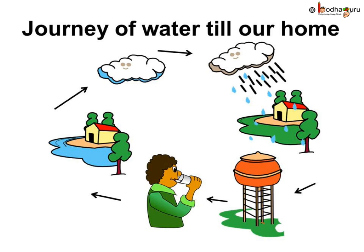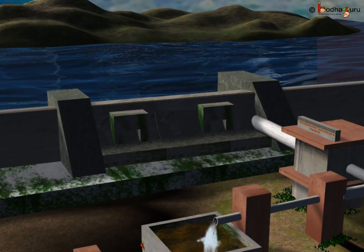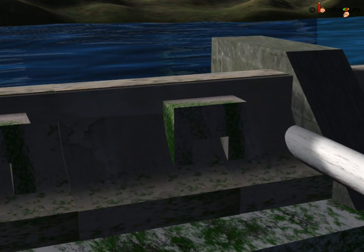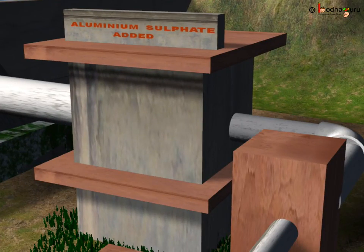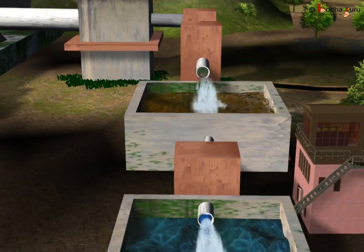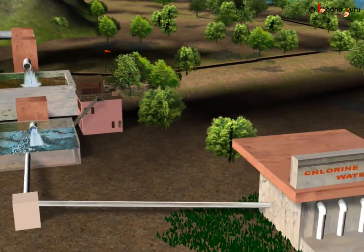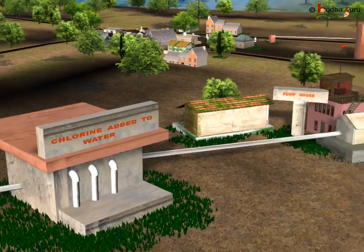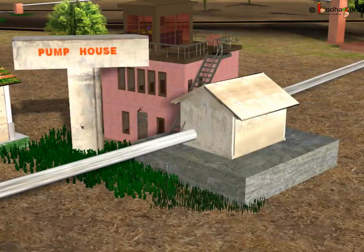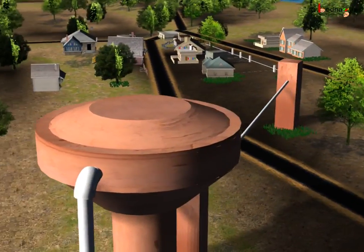Do you know how you get clean drinking water at home? The water reaching our homes is first cleaned in town waterworks before it is supplied to us. The following processes are used: Sedimentation — water is first allowed to stand in large sedimentation tanks where large insoluble particles settle at the bottom. Filtration — water is then filtered through sand beds where small insoluble particles are removed. Chlorination — chlorine is added to water to kill the germs. Here you can see the chlorination process in a town water supply plant. The purified water is then carried in underground pipes and taps to our homes.